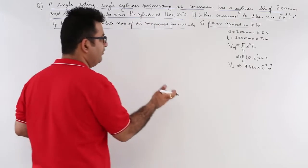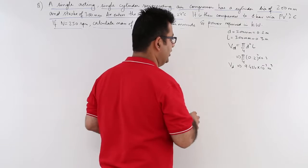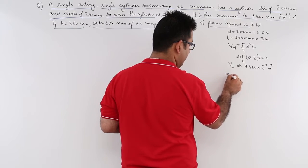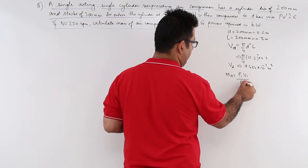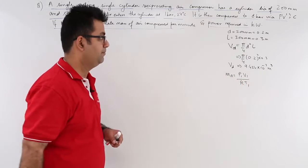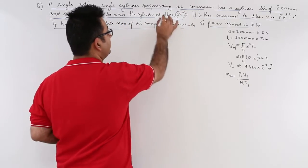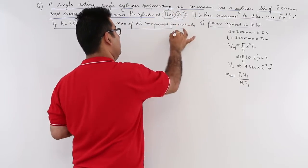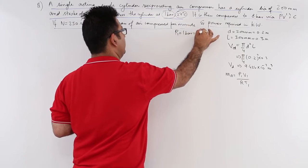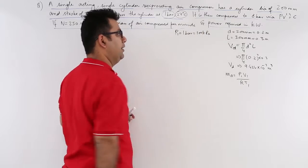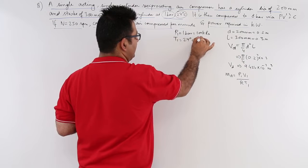Now we need to find out how much mass will this volume have. So mass of air can be taken as P1 V1 upon R into T1. T1 is 27 degree Celsius and P1 is 1 bar. So P1 is 1 bar or 100 kPa, T1 is 27 degree Celsius,